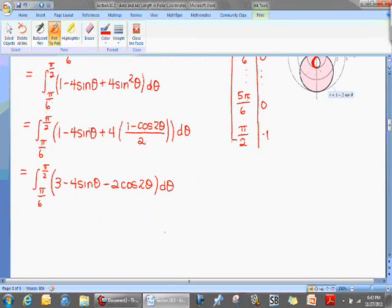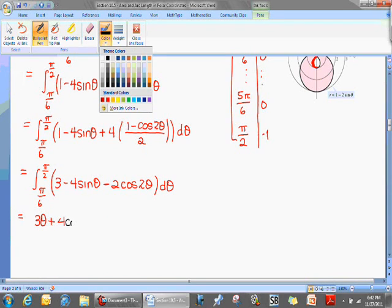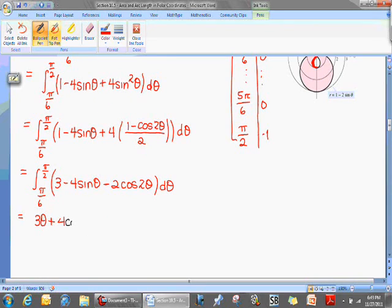So here we go. Integration of three, of course, with respect to theta is three theta. The integral of negative four sine of theta would be a positive because the integration of sine is going to be negative cosine. Negative cosine of theta. And switch color now all of a sudden. Let's see, four cosine of theta.